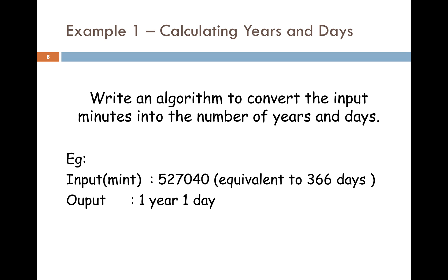Here's an example: calculate in years and days. Write an algorithm to convert input minutes into a number of years and days. For example, you get a large number like 527,040 minutes — that is equivalent to 366 days, so the output should be one year and one day. If you enter a number of minutes, you have to show the equivalent number of years and days.